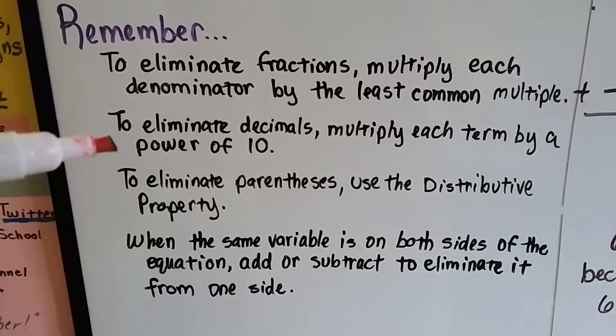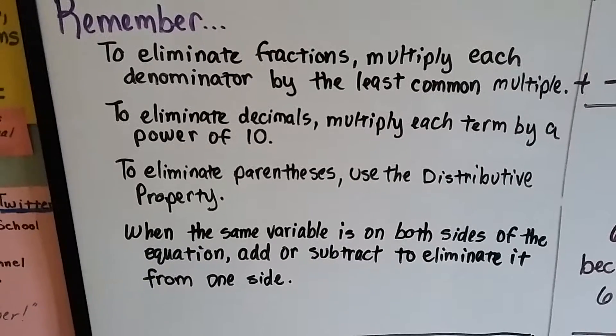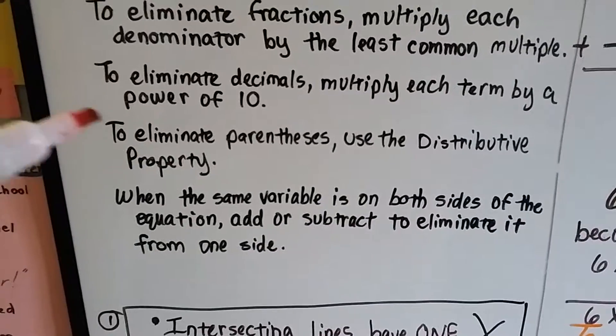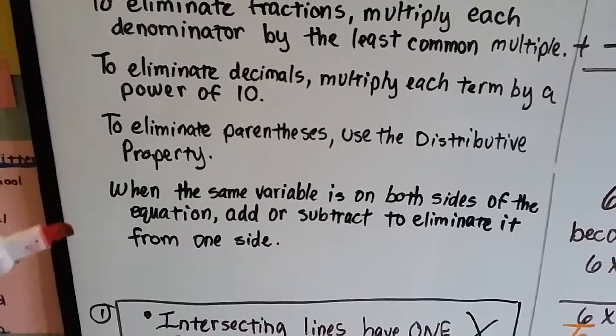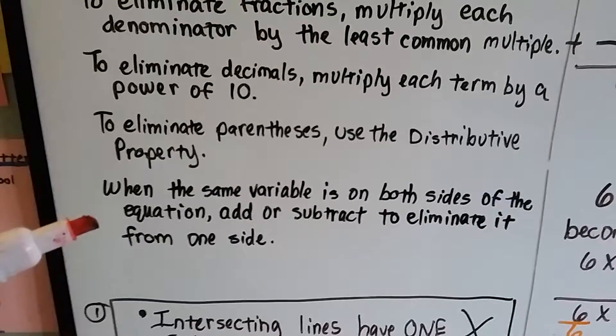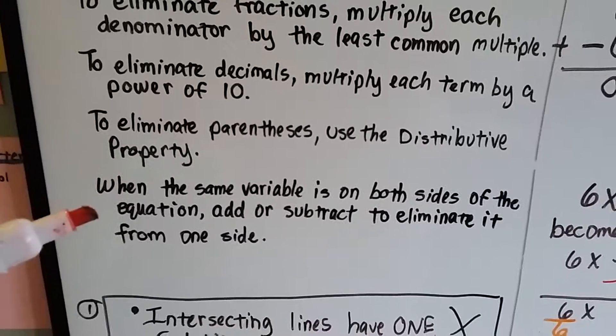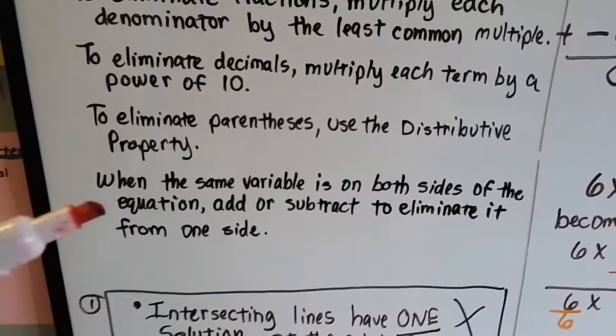To eliminate parentheses we use the distributive property. When the same variable is on both sides of the equal sign, we add or subtract to eliminate it from one of the sides.